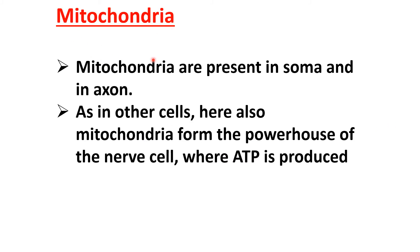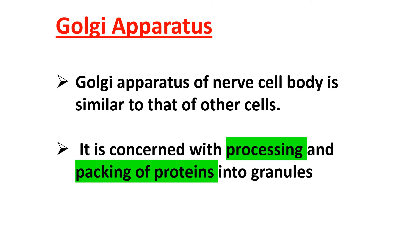Mitochondria are present in the soma and in the axon. As in other cells of the body, mitochondria form the powerhouse of the nerve cell, where ATP is produced. The Golgi apparatus of the neuron cell body is similar to that of other cells and is concerned with the processing and packaging of proteins into granules.